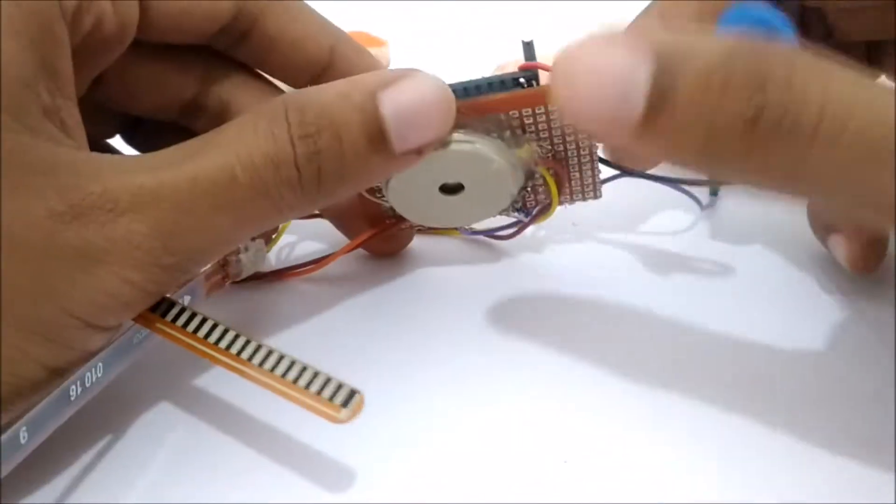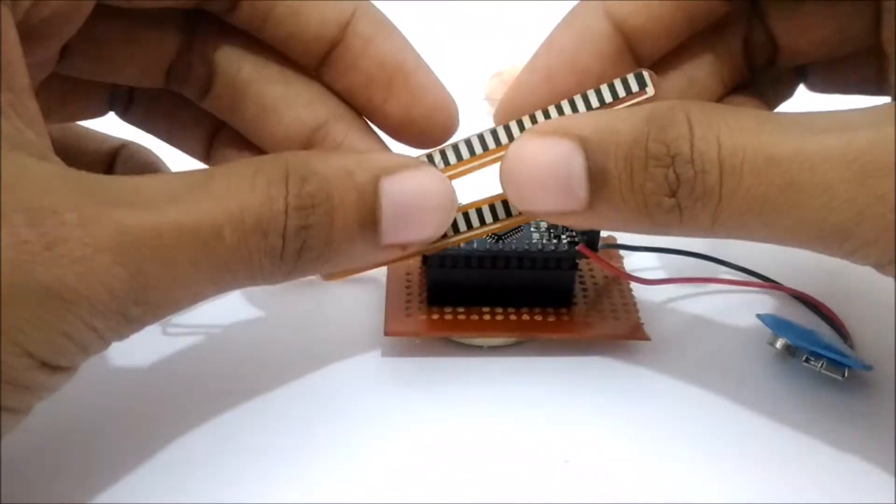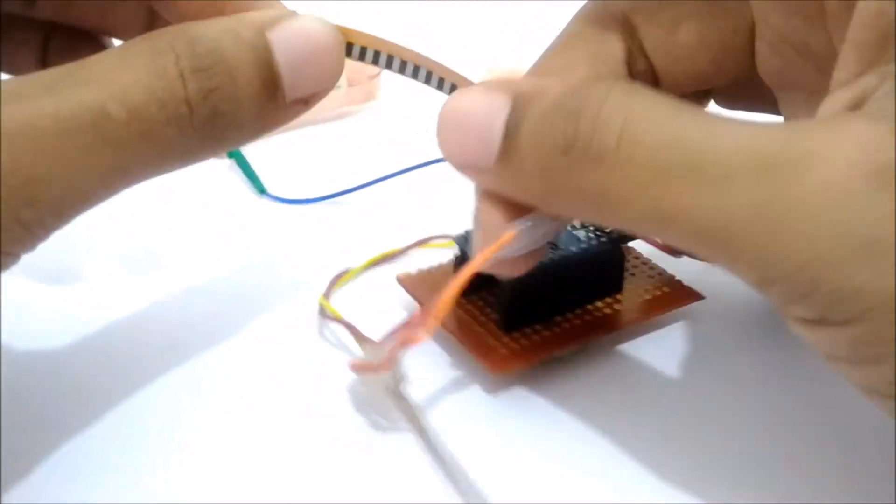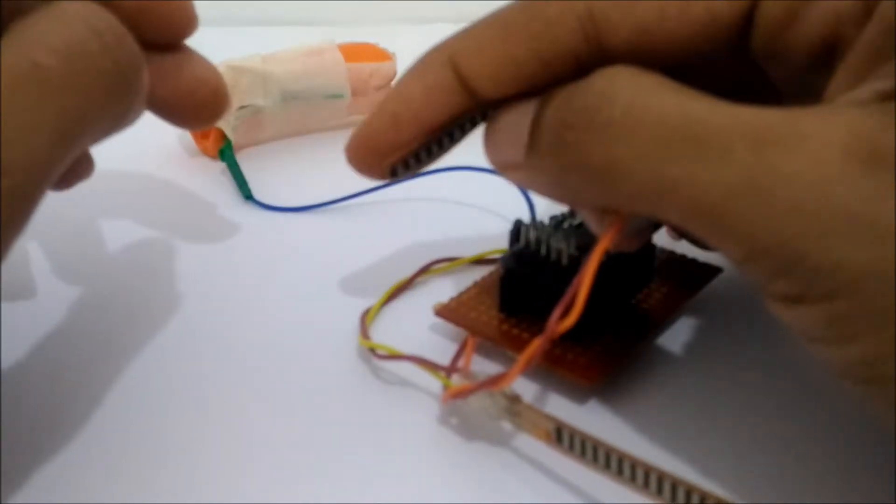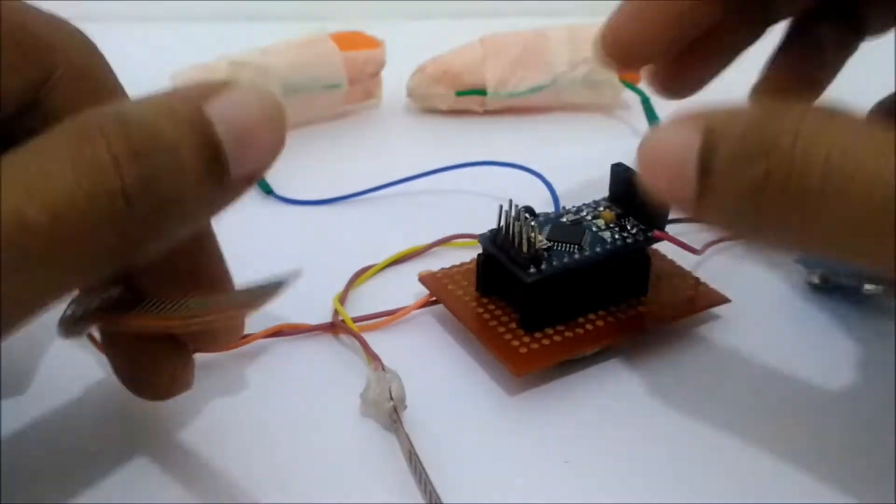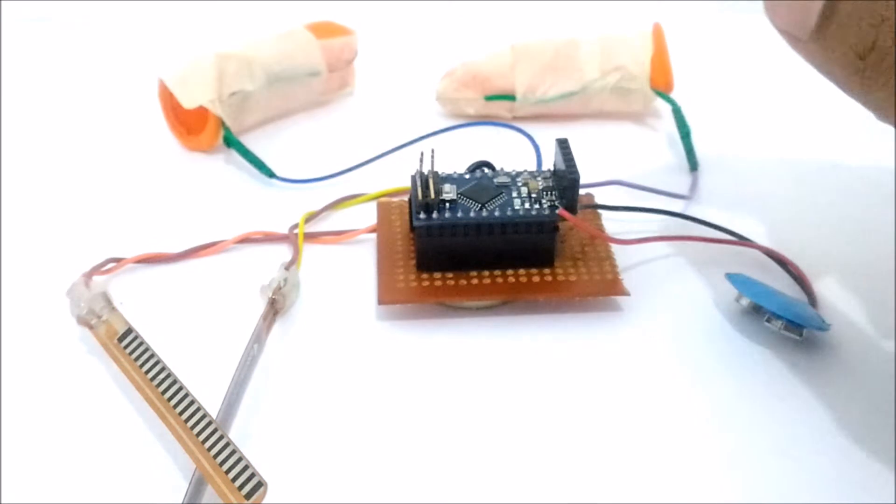We also have two flex sensors which will be inserted inside the finger gloves like this. So whenever you bend your finger, this flex sensor will also bend, and based on the amount of bending, the sound will also get varied. So once you wear this glove, you can touch anywhere and the sound will be produced based upon how much you bend your finger and touch it.